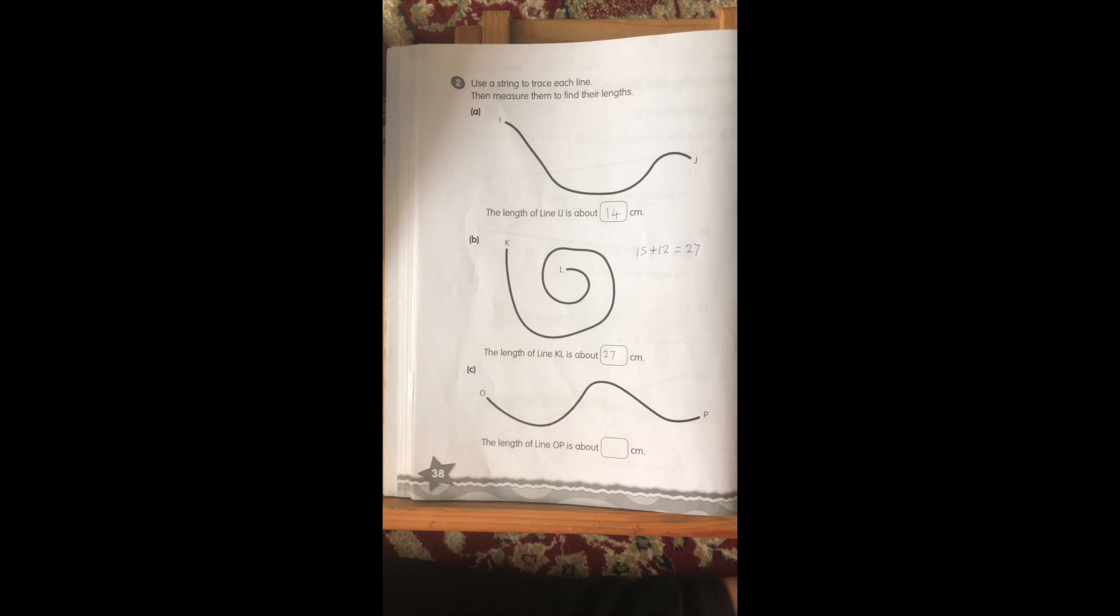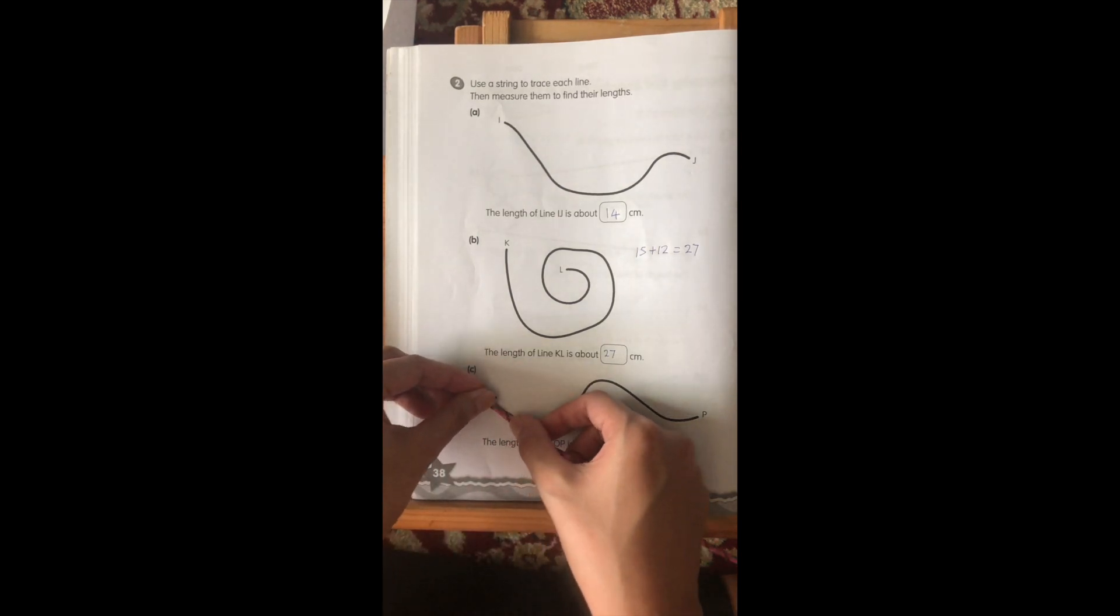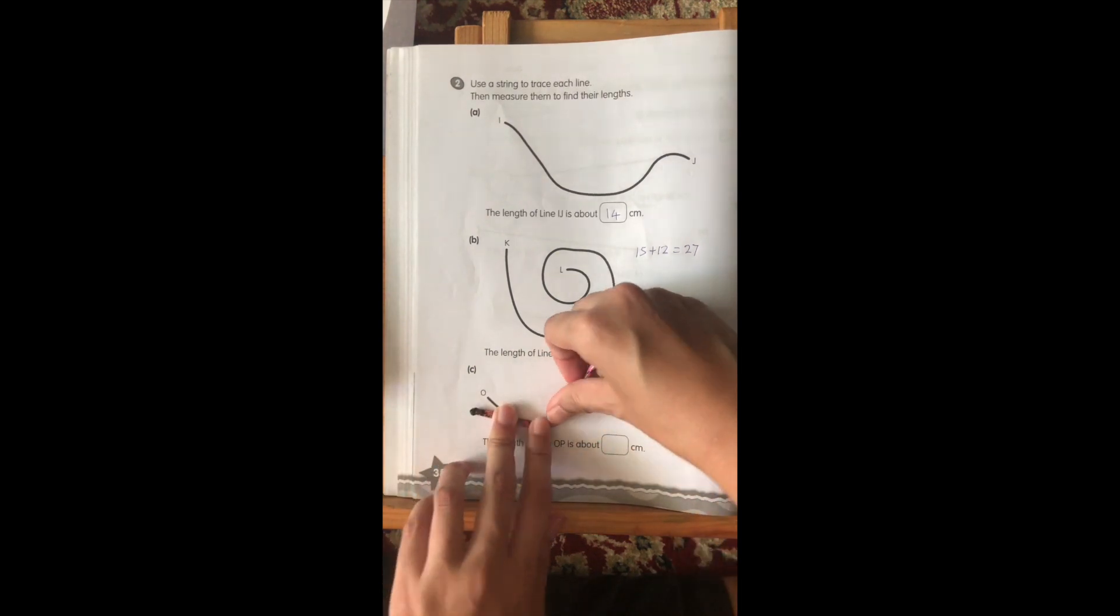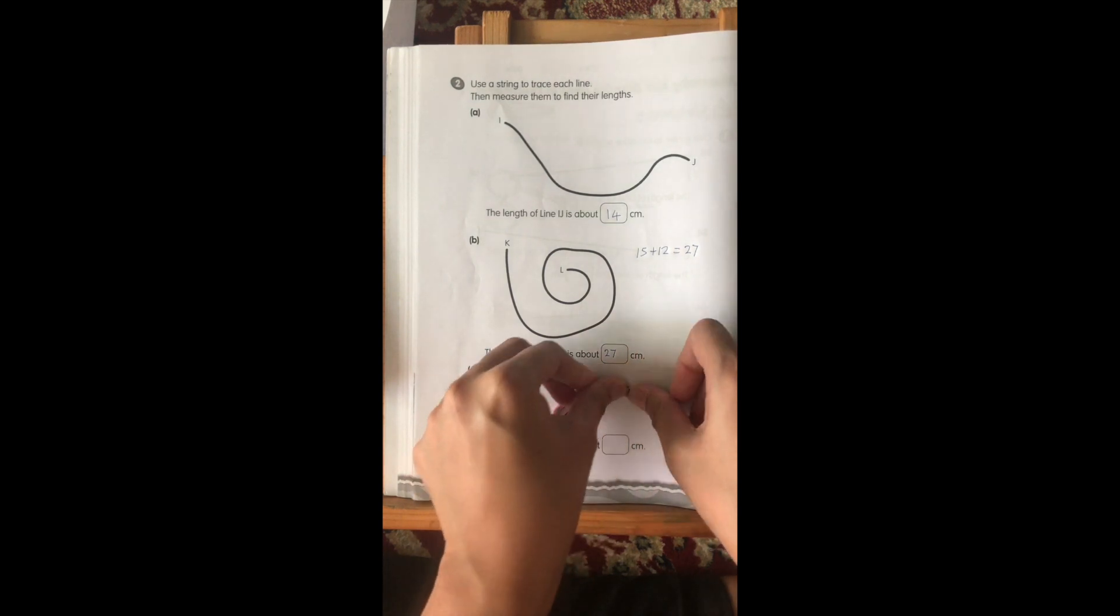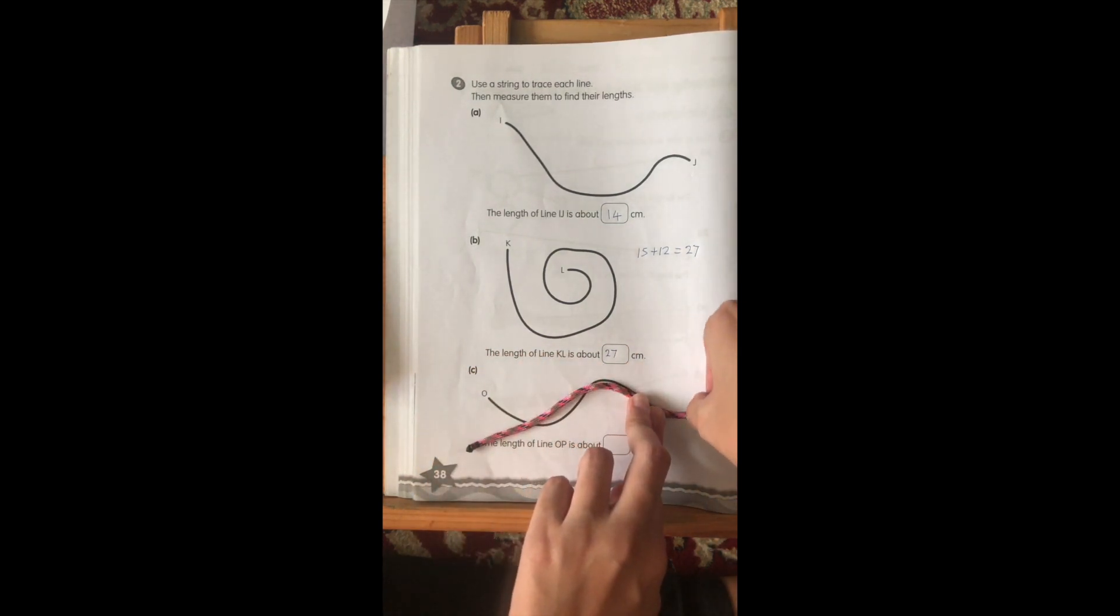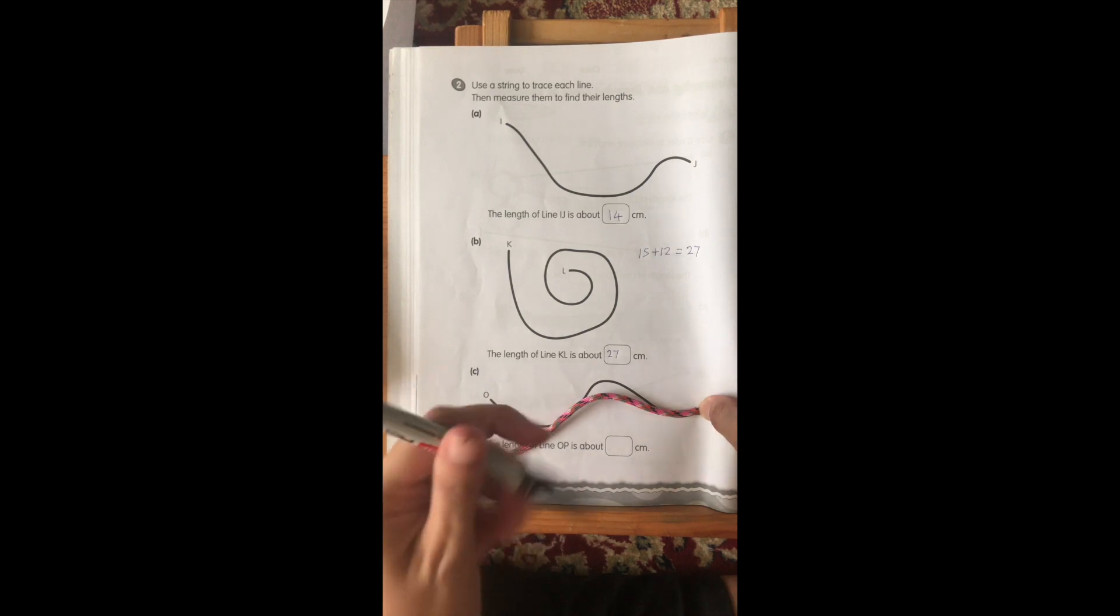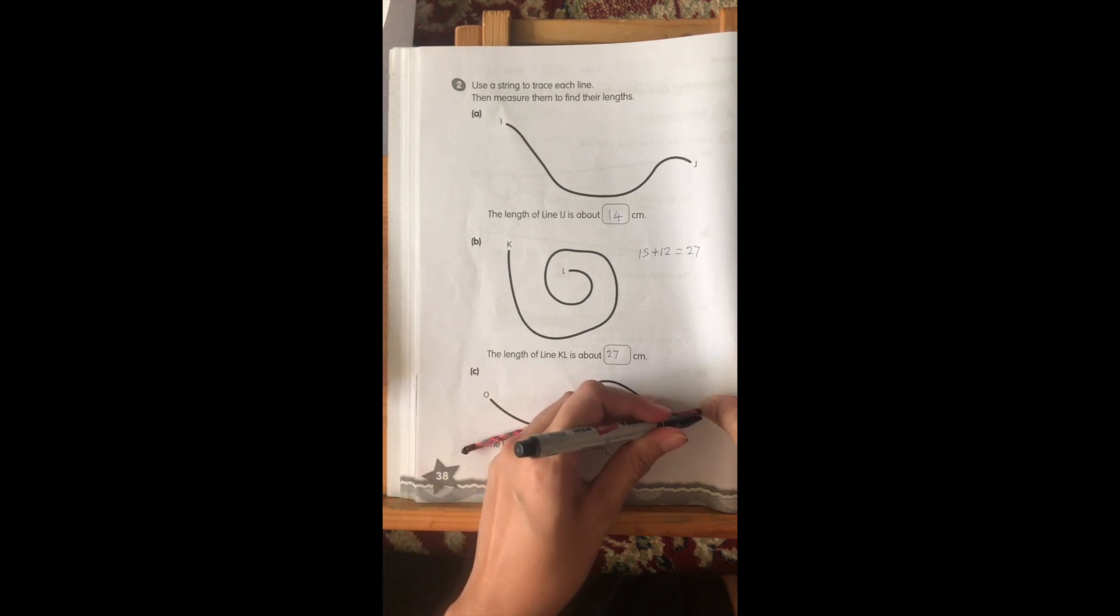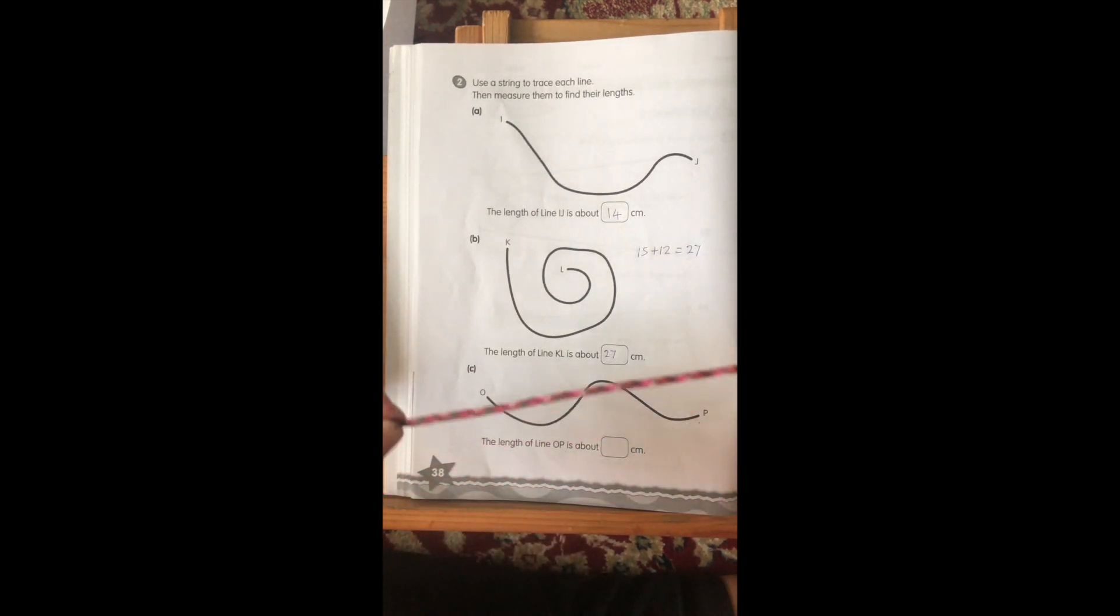Now, the last one, for option C, the length of line OP. So, again, we have a starting point. Now, I can reuse my starting point. You see, it's already marked. So, I start at the same one. Again, I trace it. When I'm tracing, I need to press it firmly down until the end here. So, again, I take my marker and I draw it down. The reason why I use a marker is because it's darker and it's more prominent. So, I'm able to see it.